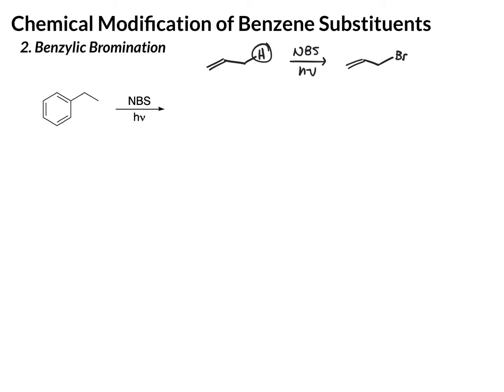Well, the benzylic position is very similar. So the benzylic position is right here. And in order for this reaction to occur, you do need a benzylic hydrogen — at least one. This one has two. And under these conditions, we brominate at that position. So we end up with a benzylic bromide.